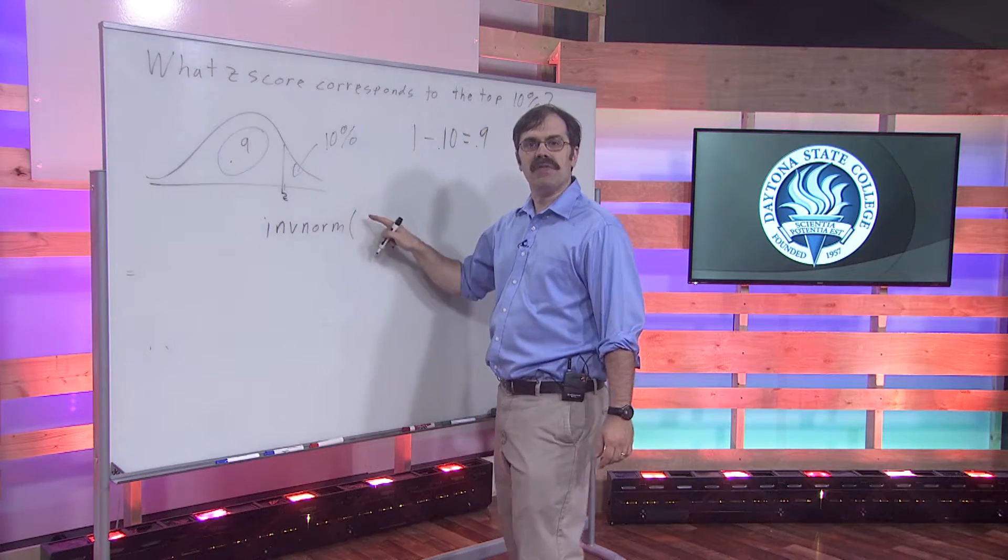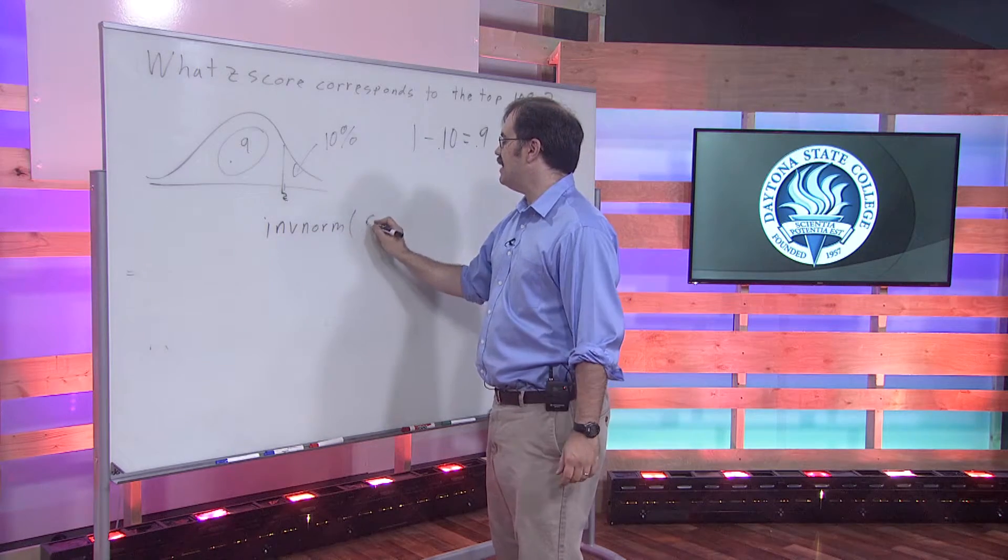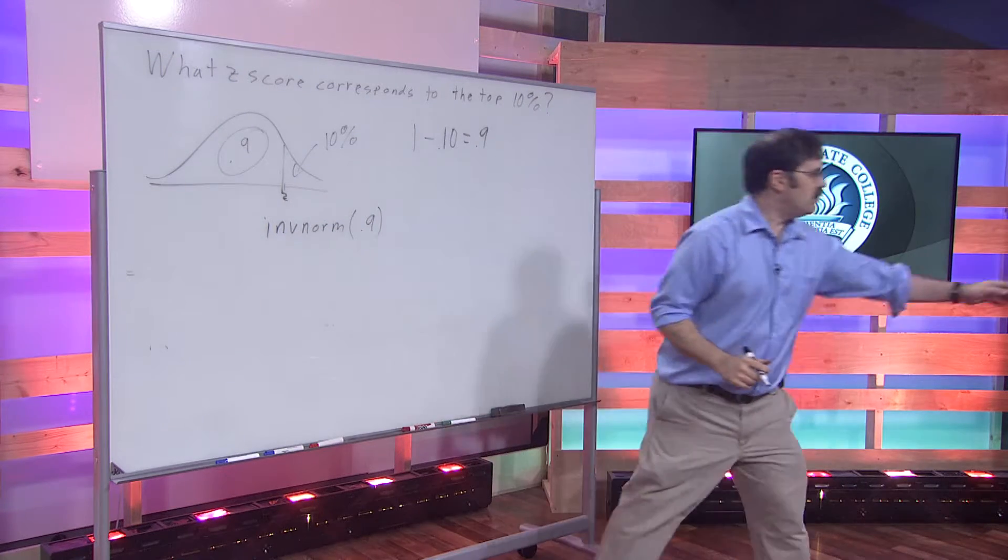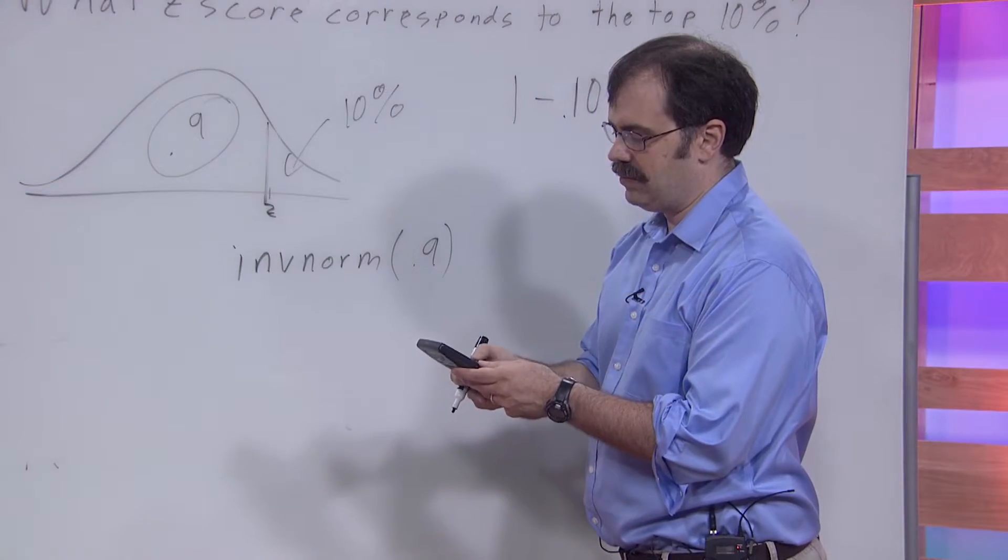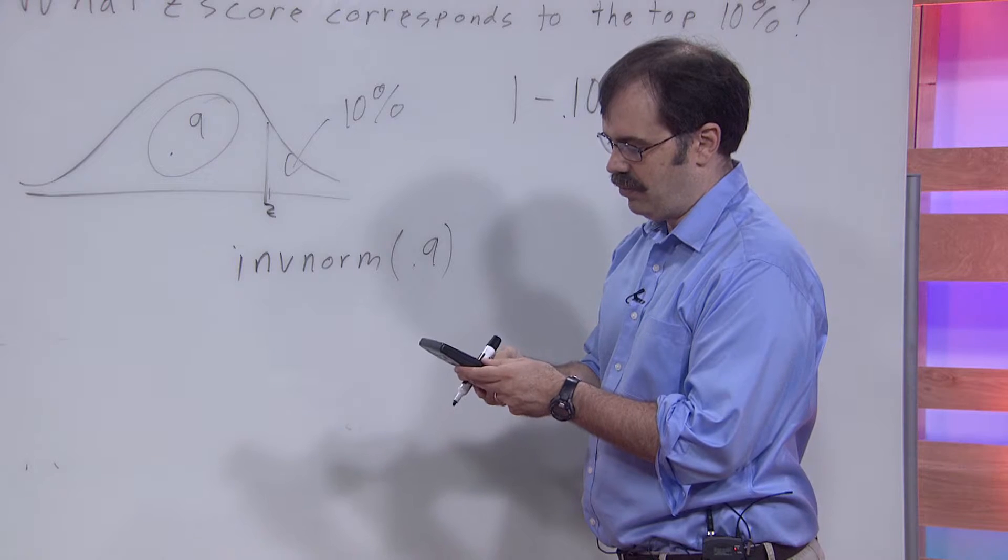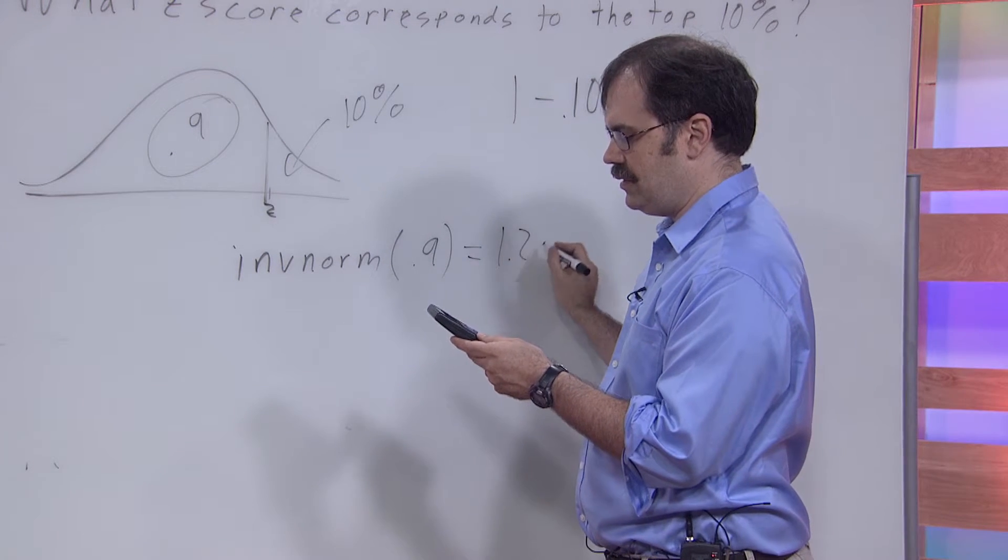So that's the number that we want to use with the INVNORM function. You plug in .9 here, and you grab your calculator, and you plug this in, you put in .9, and you get 1.28.